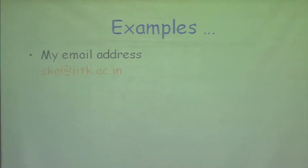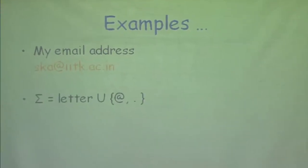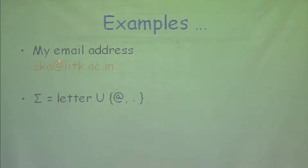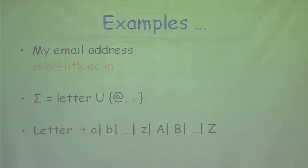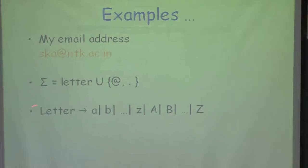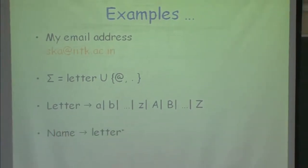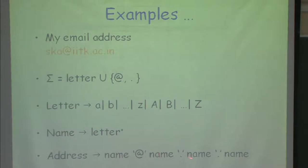More examples before I get into programming languages. Here is an email ID described using regular definitions. What is my character set? It is letters, plus dot and the '@' symbol. Rather than using these alphabets over and over again, I can give a name 'letter', then define 'name' as a string of letters, and 'address' as a name followed by '@' followed by name and so on. You may say this is the domain information. You can write different kinds of descriptions for this — this is one of the descriptions.